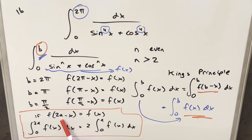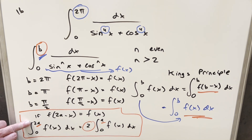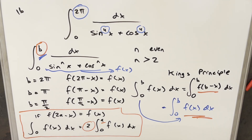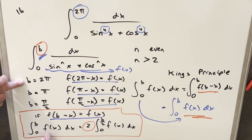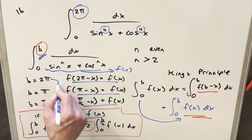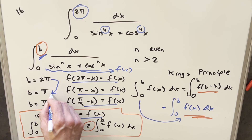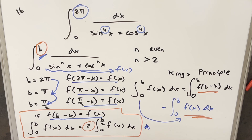When f(b − x) = f(x), we can use a principle I derived in a previous video: we can cut the upper bound in half and bring a factor of 2 out front. To avoid confusion with naming conventions, I'll use b throughout. So if f(b − x) = f(x), the integral from 0 to b equals 2 times the integral from 0 to b/2. Since our starting b is 2π, cutting in half gives π, then π/2.